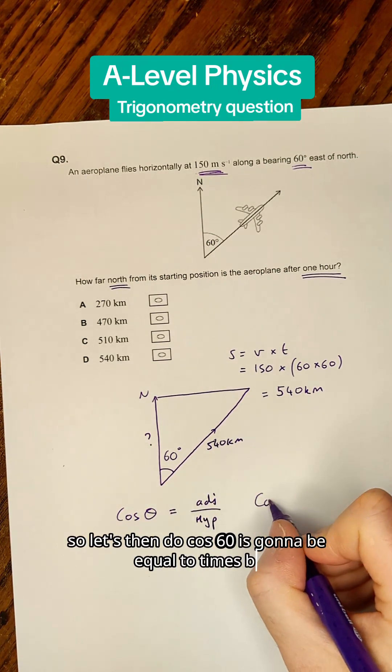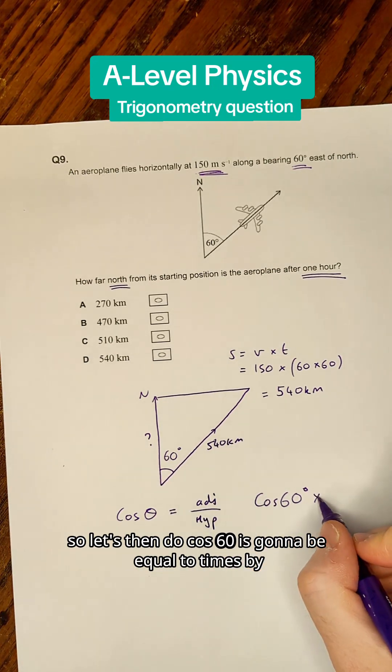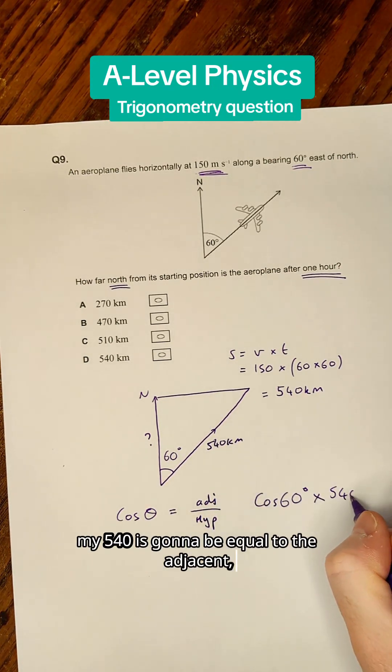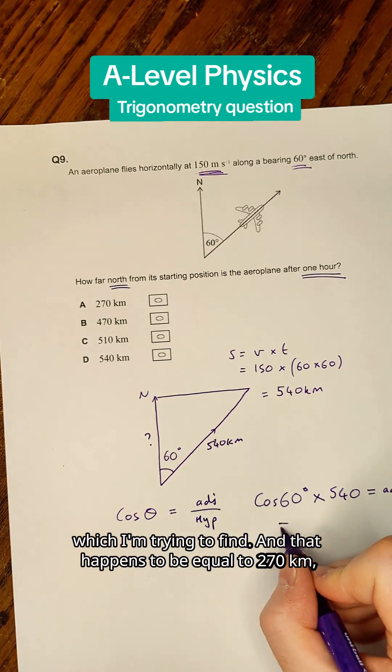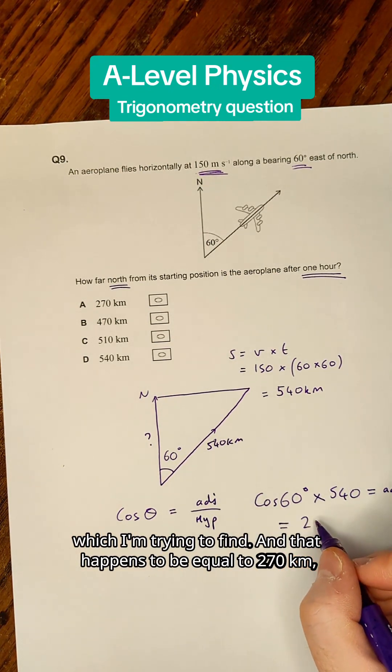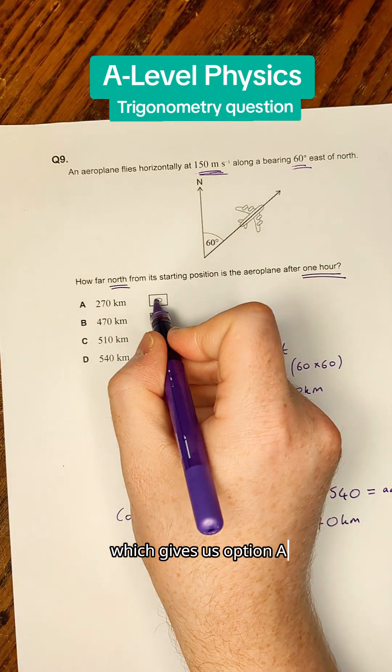So cos 60 times 540 equals the adjacent, which I'm trying to find, and that equals 270 kilometers, which gives us option A.